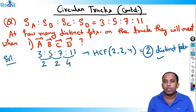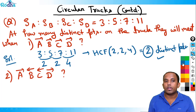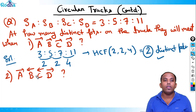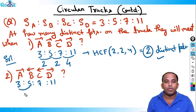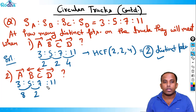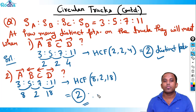Second case: A and B moving in opposite directions, B and C in the same direction, and C and D in opposite direction. Speed ratio is still 3:5:7:11. A and B at opposite directions: 3 + 5 = 8 distinct points. B and C same direction: 7 minus 5 = 2 distinct points. C and D opposite: 11 + 7 = 18 distinct points. HCF of 8, 2, and 18 = 2. Answer is again 2 points.